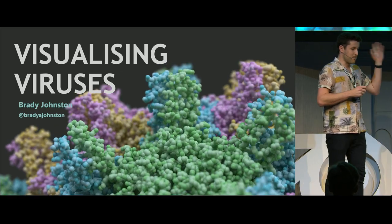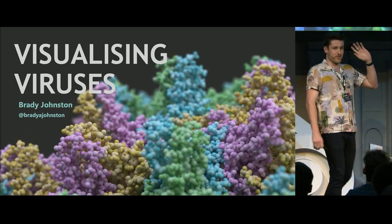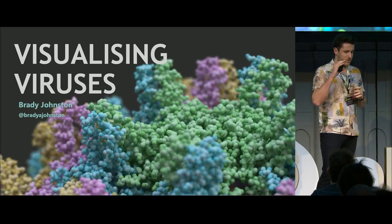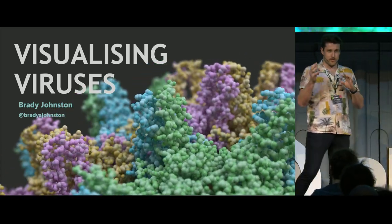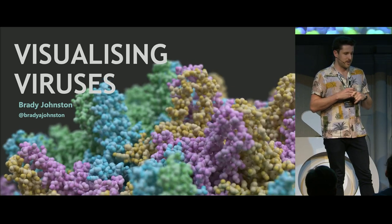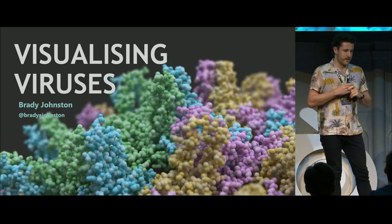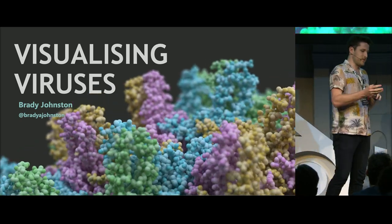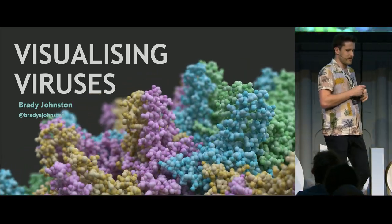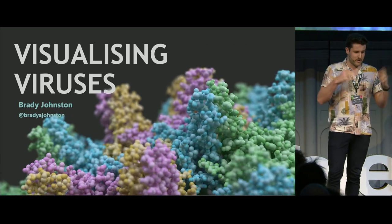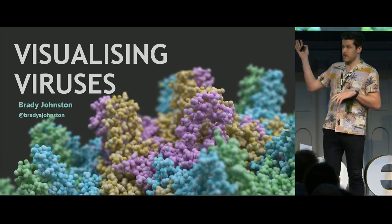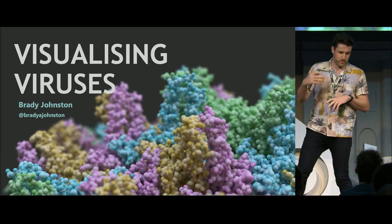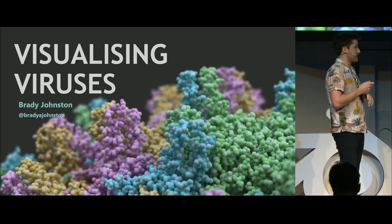Up on the screen currently, you'll see the surface of poliovirus. We're sort of zooming over, seeing all parts of the proteins and amino acids wiggling about. I'll explain what's going on and what I mean by proteins and amino acids once we get further into it. But this is about how we can take viruses, bring them into Blender using geometry nodes, and make some cool animations.